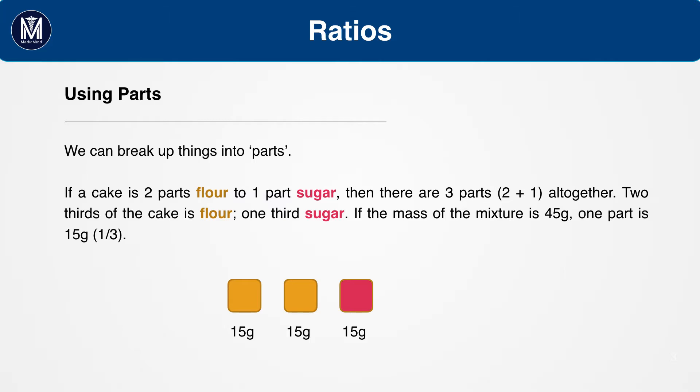If the mass of the mixture is 45 grams, one part is 15 grams, which equals one third.